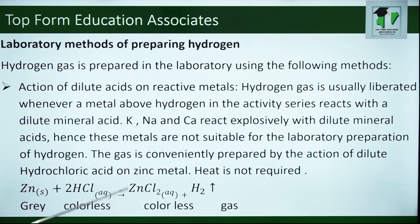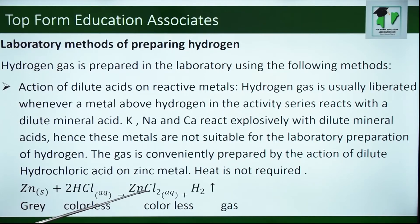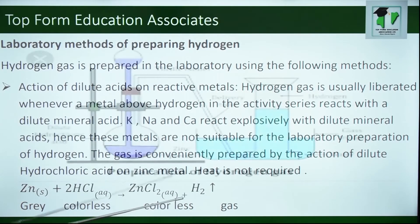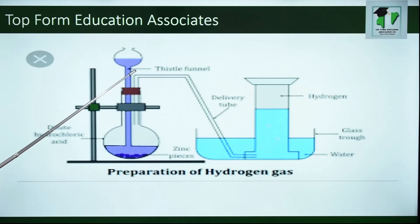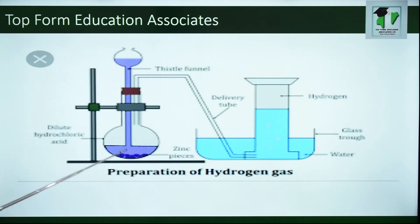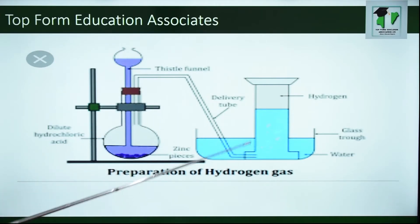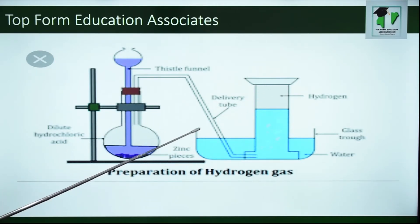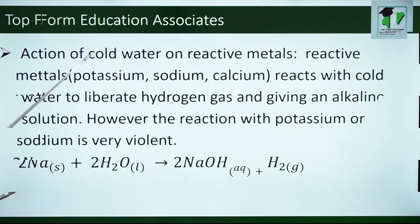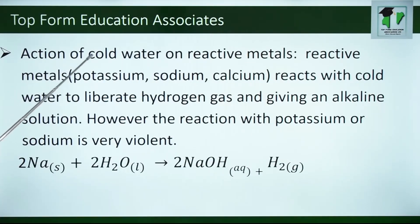There is no heat required. You can see the equation of the reaction, where zinc, which is gray in color, reacts with HCl to give us zinc chloride and hydrogen gas. Here you can see dilute hydrochloric acid being poured on the zinc pieces and then delivered through the tube to form hydrogen gas.